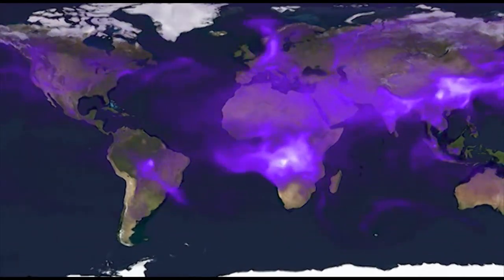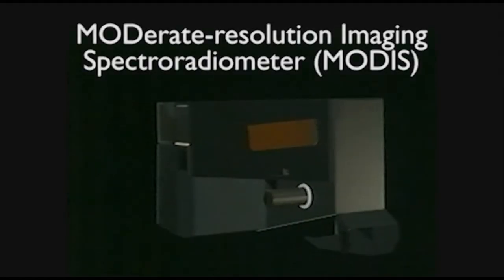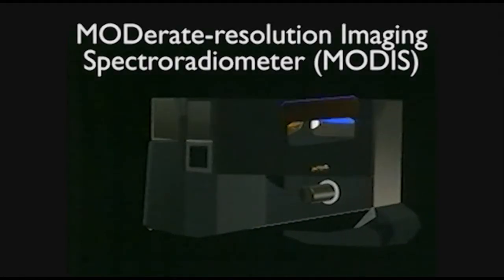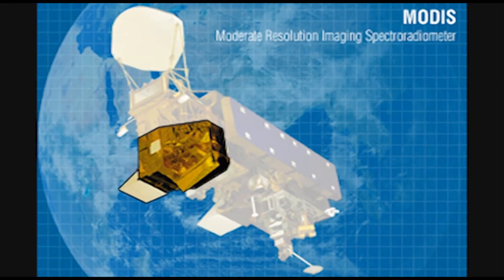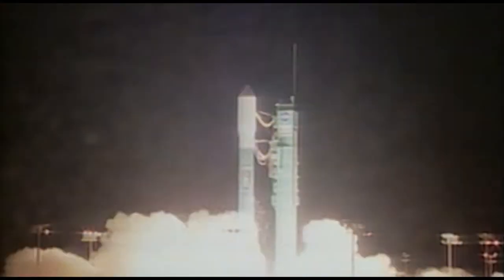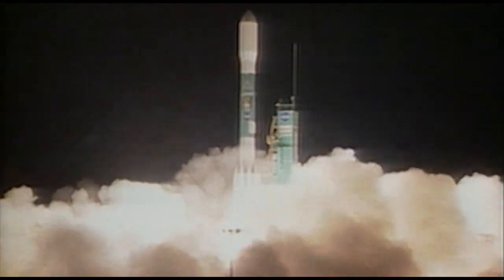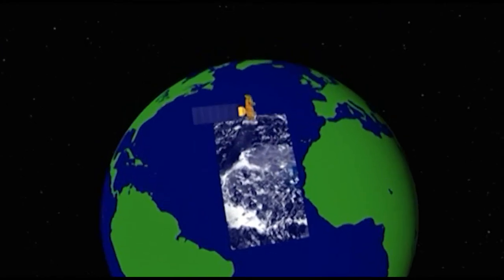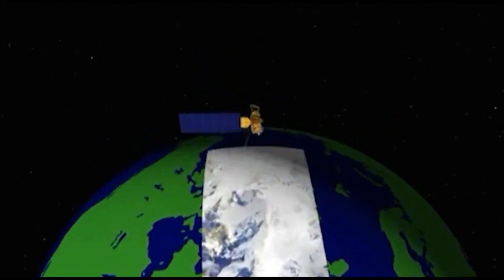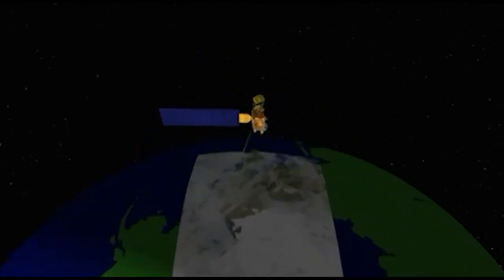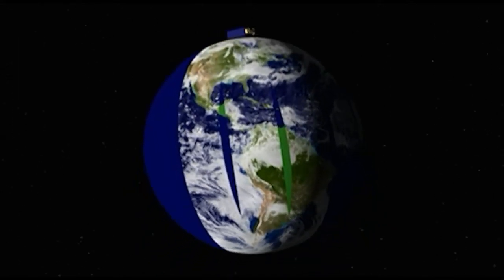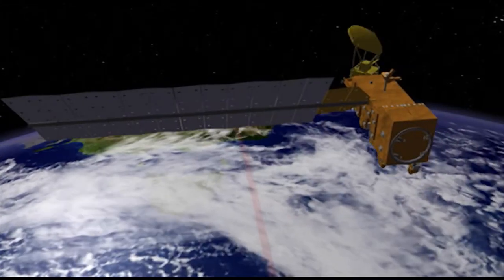One instrument capable of detecting aerosols from space is the Moderate Resolution Imaging Spectroradiometer, or MODIS. MODIS instruments are carried by NASA's Terra and Aqua satellites, which were launched in 1999 and 2002, respectively. The MODIS instruments on these satellites have a viewing swath of approximately 1,400 miles, covering the entire Earth's surface every one to two days, with twice daily passes over the continental United States.